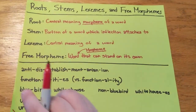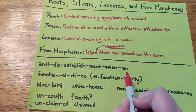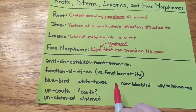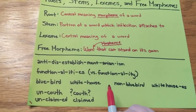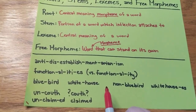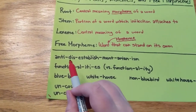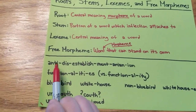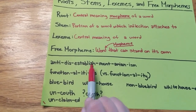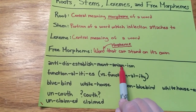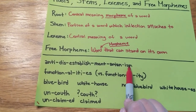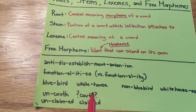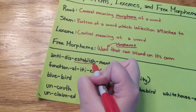In the word antidisestablishmentarianism — our famous word that a lot of us learned in elementary school as the longest word of English, which of course isn't actually the longest word of English — we have all these different pieces of meaning: anti, dis, establish, ment, air, in, and ism. Those all have independent sort of meaning. But where does the central meaning of this word come from? It comes from establish.